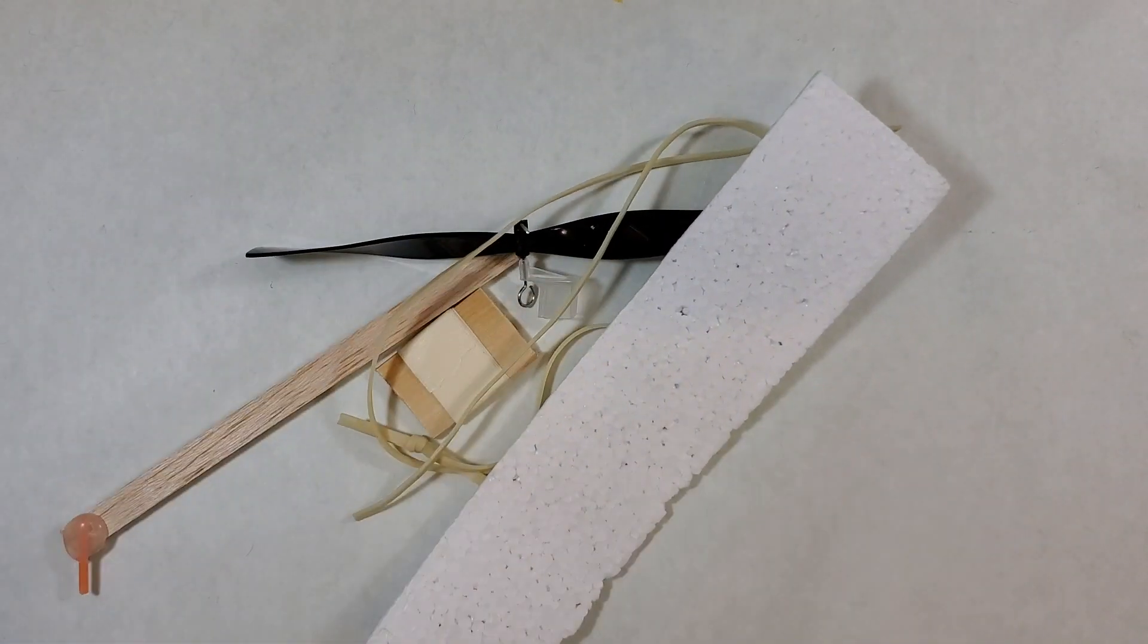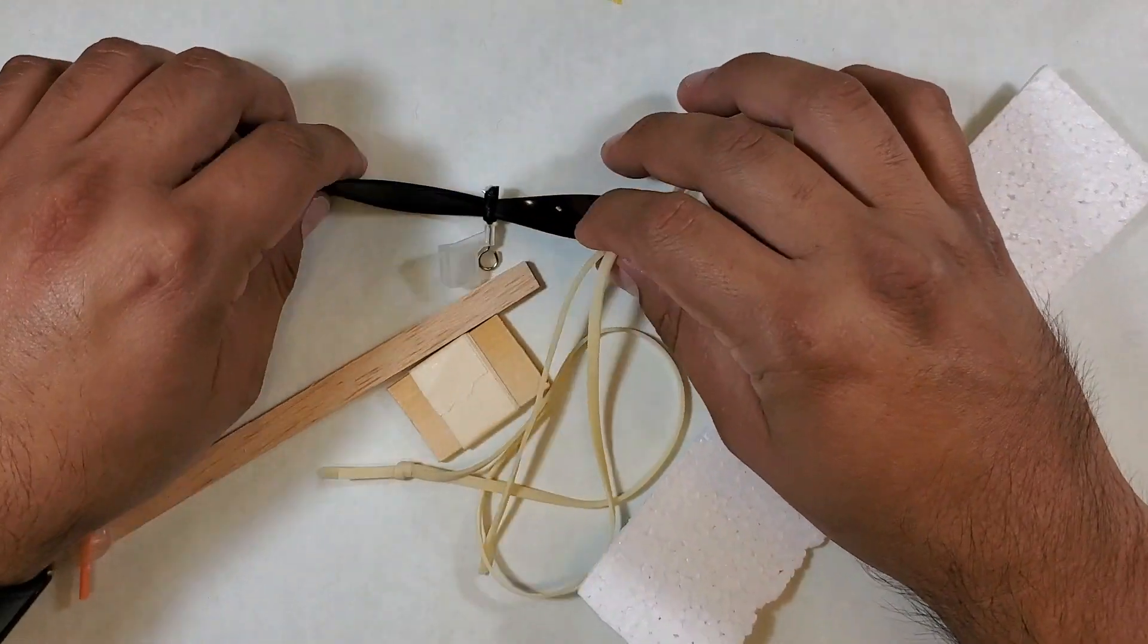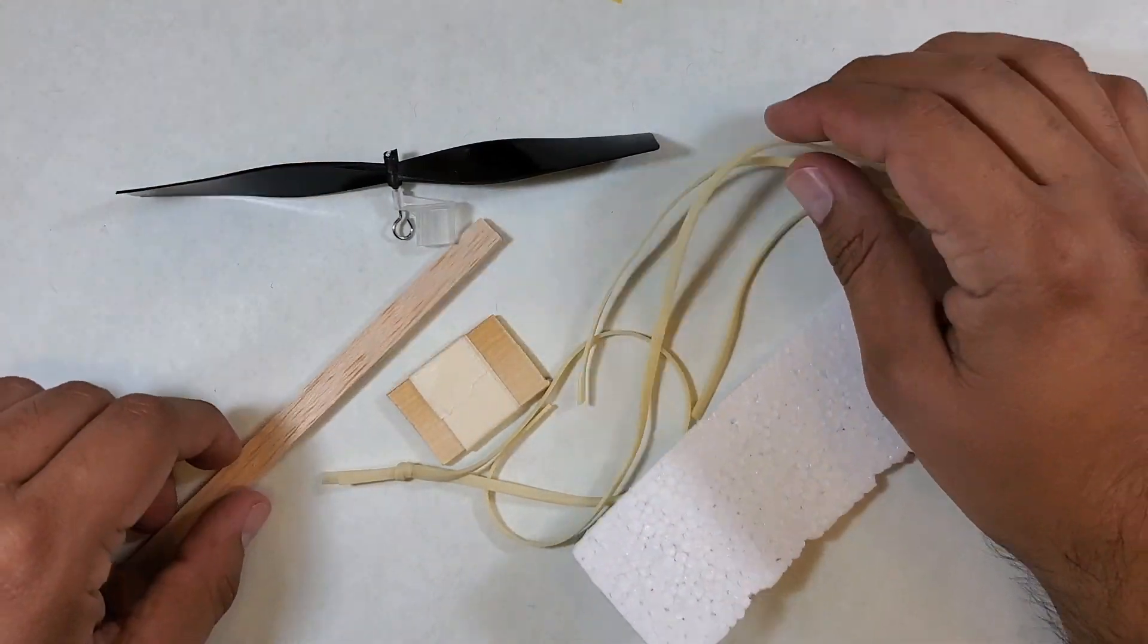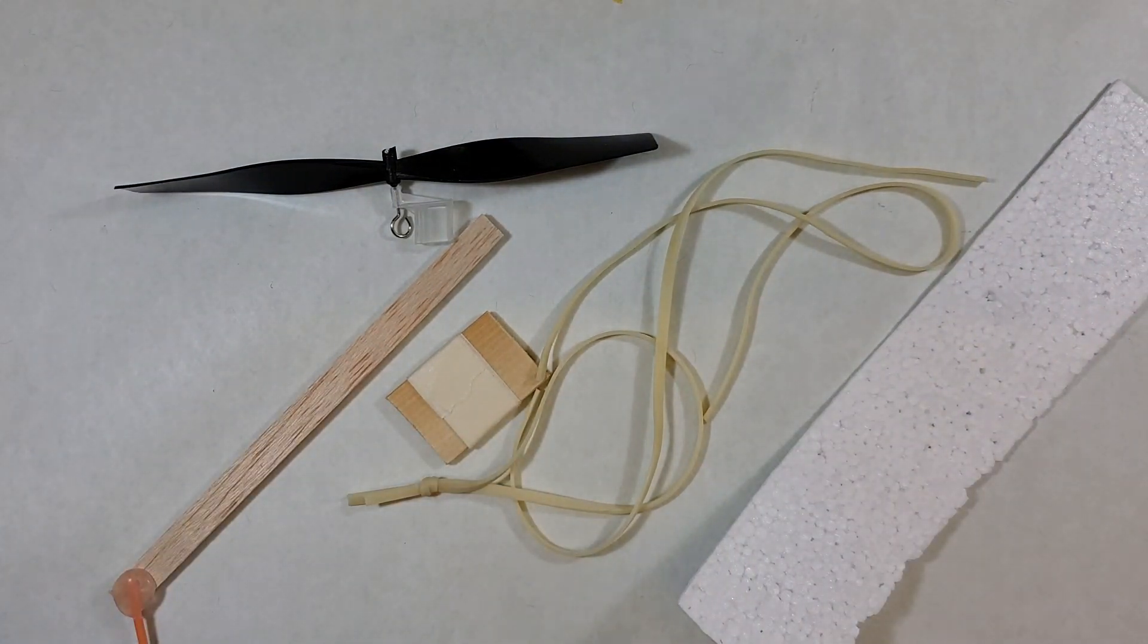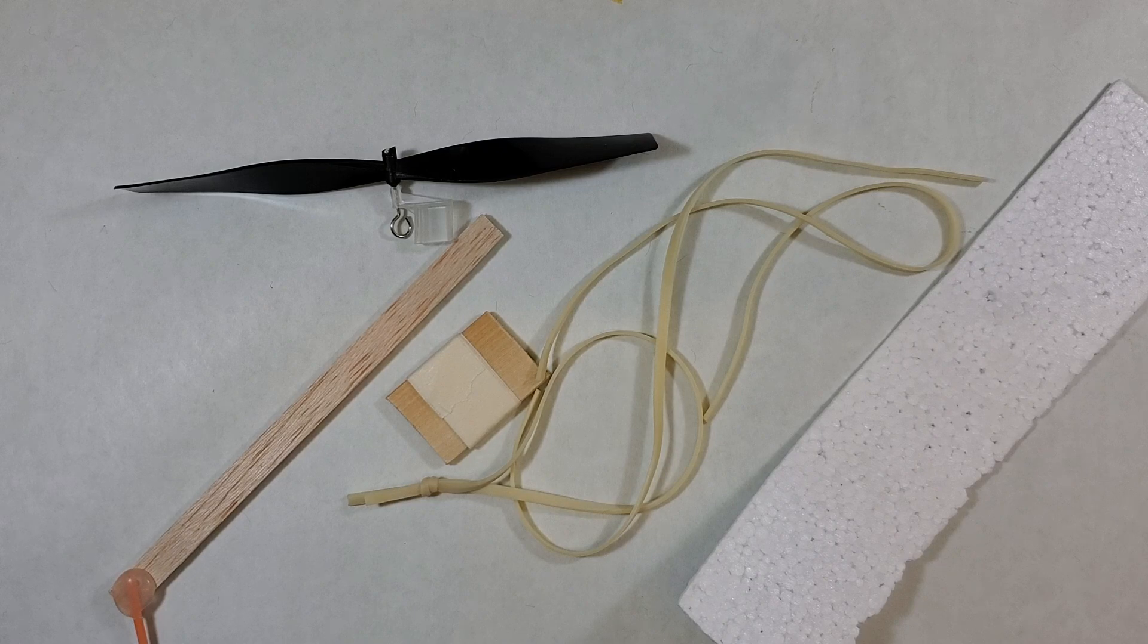The first thing you have to do is make sure that you have the needed materials to assemble this project. Inside the bag, you will find a wood stick for the body with a tiny tube glued onto it, a propeller with a hook and bracket, three rubber bands, a styrofoam wing, and some tape.